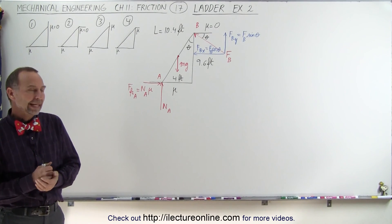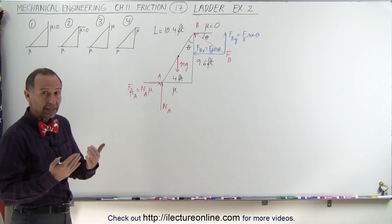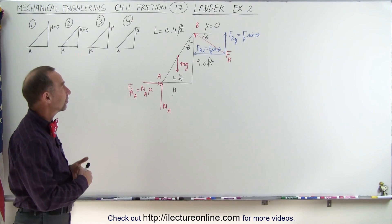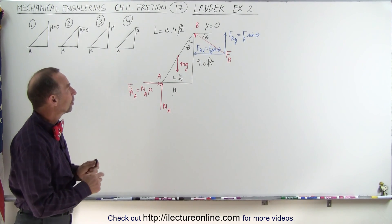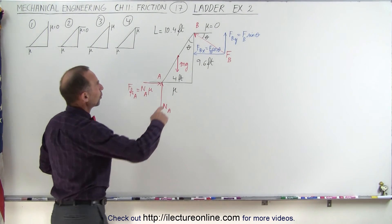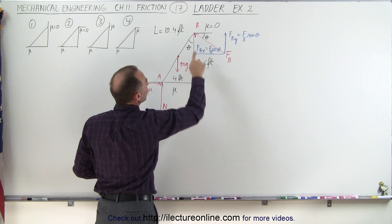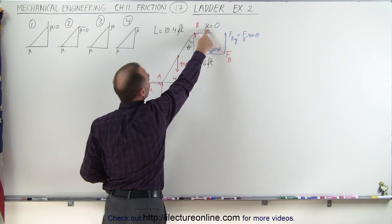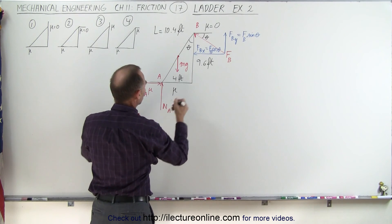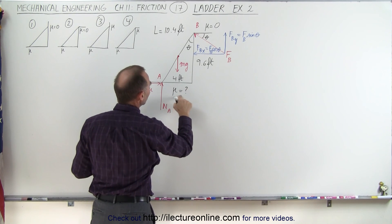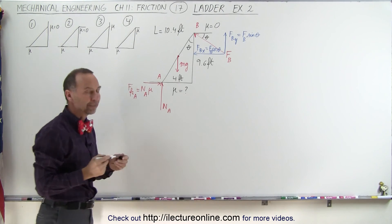Welcome to our lecture online. In this example, we have the same ladder we had in the previous example — same length, same angle of inclination — but now it's resting up against the corner at the very top. There's no friction at the top, but there's friction at the bottom, and we're trying to find out what the coefficient of friction is required to keep the ladder from sliding.